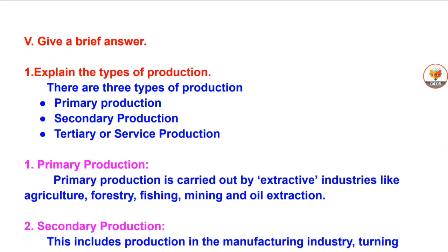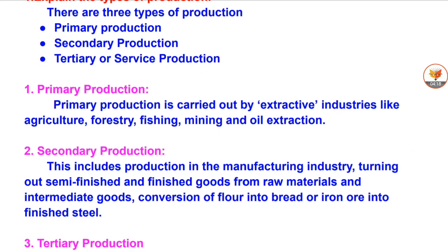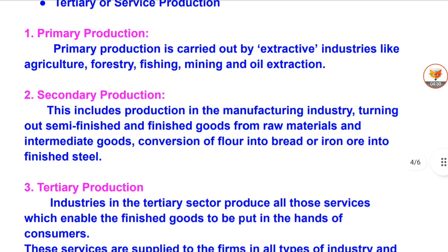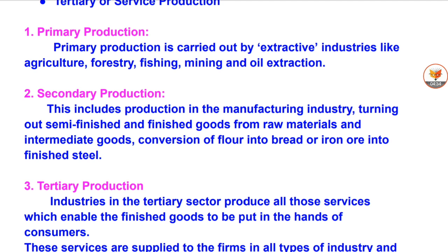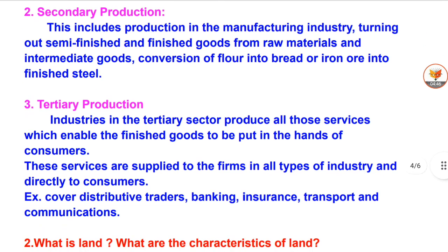Give a brief answer. Question 1: Explain the types of production. There are three types of production. 1. Primary production — carried out by extractive industries like agriculture, forestry, fishing, mining, and oil extraction. 2. Secondary production — includes production in the manufacturing industry, turning out semi-finished and finished goods from raw materials, such as conversion of flour into bread or iron ore into finished steel. 3. Tertiary production — industries in the tertiary sector produce all those services which enable finished goods to be put in the hands of consumers. These services are supplied to firms in all types of industry and directly to consumers.